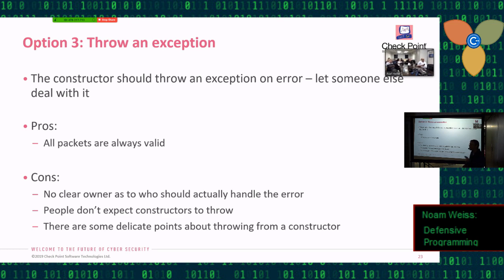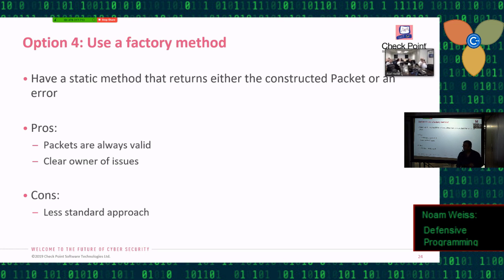The downside is that there's still no clear owner of who has to catch the exception on the other side and people don't generally expect constructors to throw exceptions. I simply don't. And there are some delicate points when throwing from a constructor because the lifetime of the object haven't even begun yet so you have to be careful when the throwing happens to clean up all the code properly. It's possible but there's some downsides. The fourth option that we went with is use a factory method.